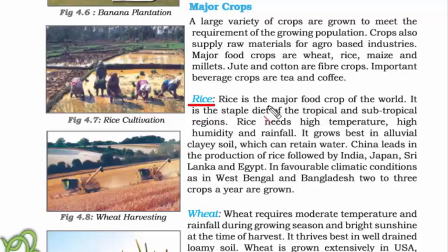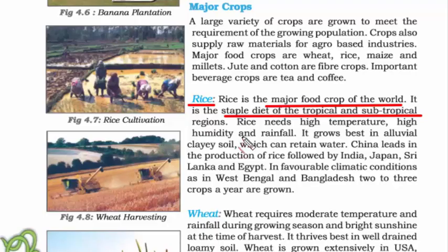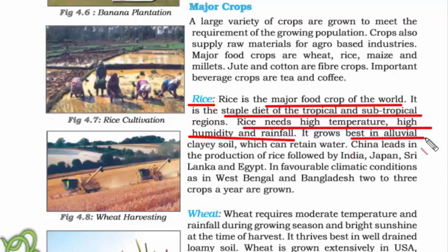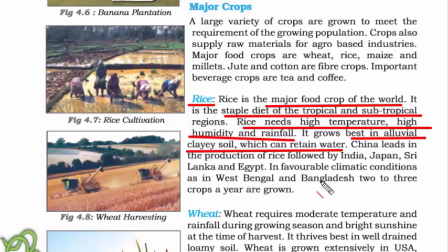Rice is the major food crop of the world and the staple diet of tropical and subtropical regions. The Tropic of Cancer divides India into tropical and subtropical parts. Rice needs high temperature, high humidity, and rainfall, and grows best in alluvial, clayey soil which can retain water. China leads in the production of rice, followed by India, Japan, Sri Lanka, and Egypt.